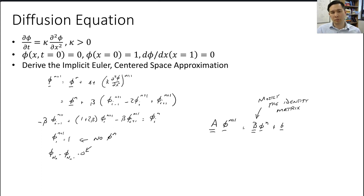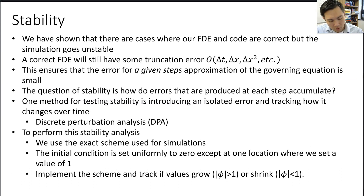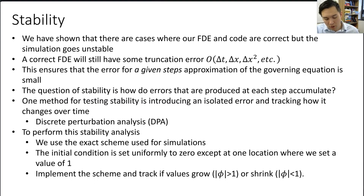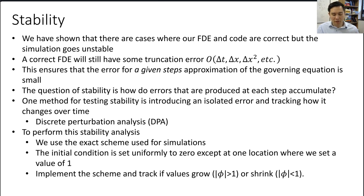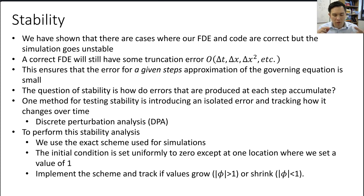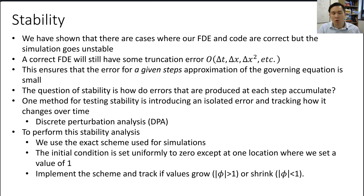The final topic is stability. We've seen cases where a correct finite difference equation still produces an unstable simulation. A correct FDE has truncation error of order delta_t or delta_x, meaning each individual time step produces a small error. The question of stability is how these errors accumulate: do they grow to become comparable in magnitude to the signal we're simulating, or do they remain relatively small? That is what determines whether the method is stable or unstable.